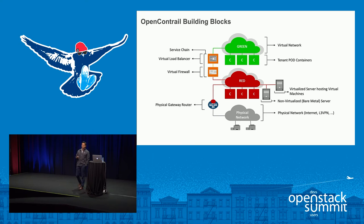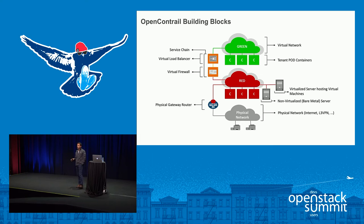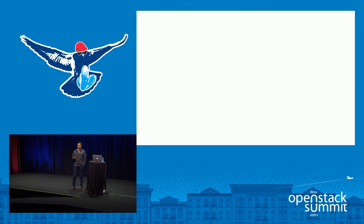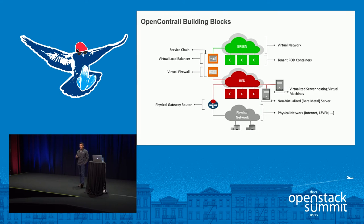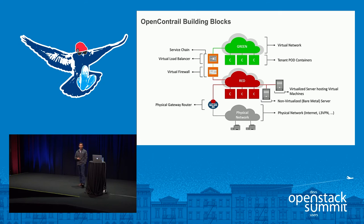Moving toward the demo, let me cover the building blocks. We have two networks: a green network and a red network. There are a bunch of pods spawned on the green network, and the red network has other Kubernetes pods as well as some virtual machines and some bare metal servers. The green network can talk to the red network only through a service chain, which could have multiple services such as a load balancer or a firewall — and the load balancer members can be pod members, bare metal members, or virtual machine members. The red network can go out to the internet by peering with an MX gateway.